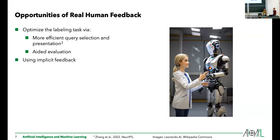And lastly, we can leverage implicit feedback that humans give all the time. When we're interacting, we use a lot of nonverbal cues — different facial expressions, gestures, and different response times. While it might be difficult to interpret, this information is readily available, and therefore it would be good for the agent to also learn from this feedback.